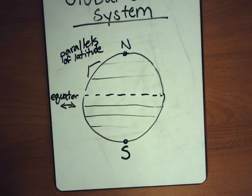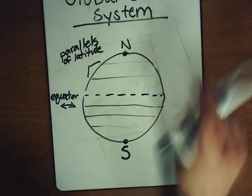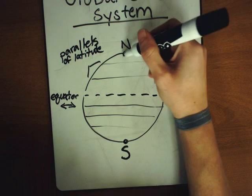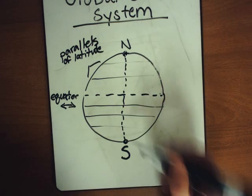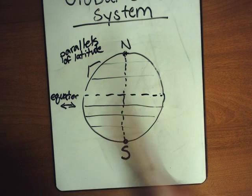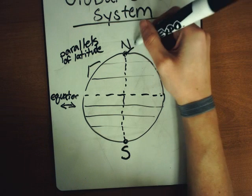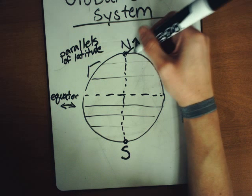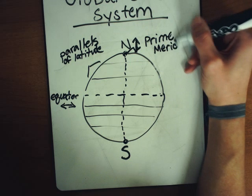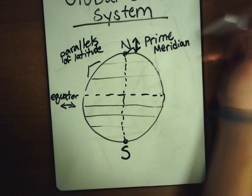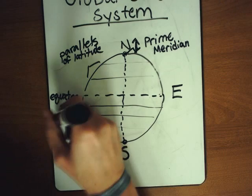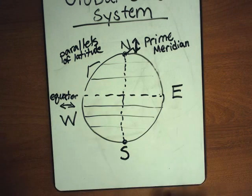Okay, so we can also break our hemispheres up into an eastern hemisphere and a western hemisphere. We do that with lines of longitude. So our major line of longitude that breaks it up at zero degrees is the prime meridian. The prime meridian runs north and south. But remember, it breaks the hemispheres up into the eastern hemisphere and the western hemisphere.